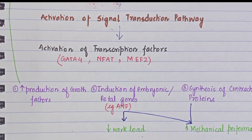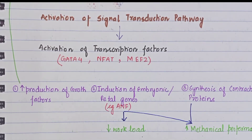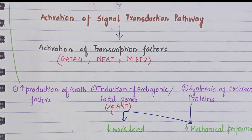In the body, when blood pressure increases, protein synthesis increases. Why does protein synthesis increase? Because the functional demand increases or the workload increases. The result is that protein synthesis increases, and when protein synthesis increases, hypertrophy increases.